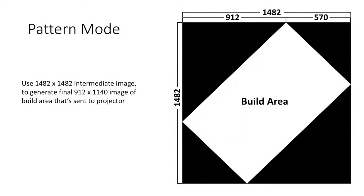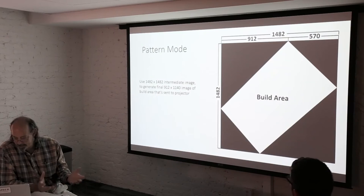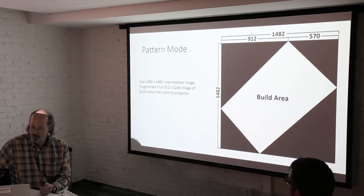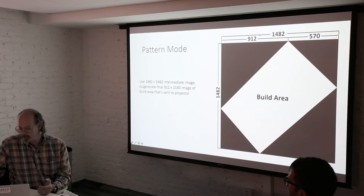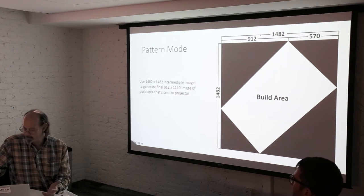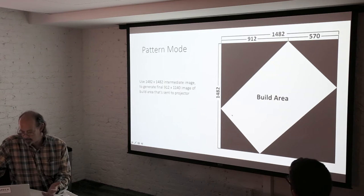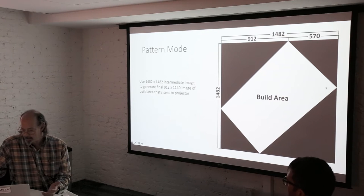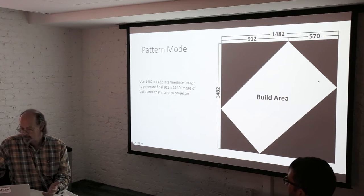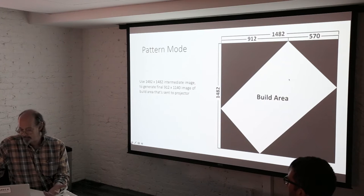That mode is called pattern mode. In pattern mode, what we're going to need to do is to create an intermediate image, higher resolution than our current 1280 by 800 image. It would be 1482 by 1482. But we're only going to use this section that corresponds to the size of our build area, rotated by 45 degrees.